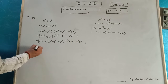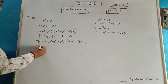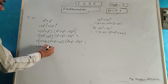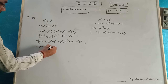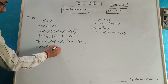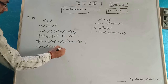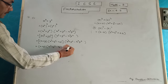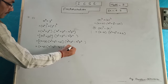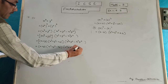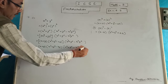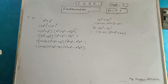Remove the big bracket. x plus y, 2nd bracket: x square plus y square minus xy, and x to the power 6 plus y to the power 6 minus x cube into y cube will be the factors of the given expression.